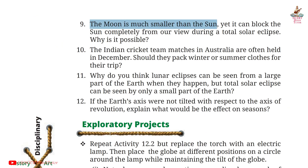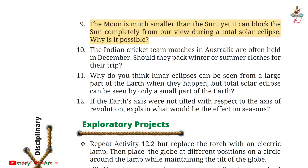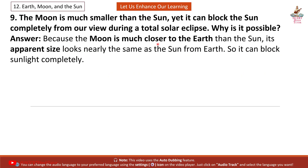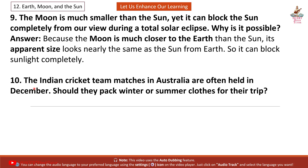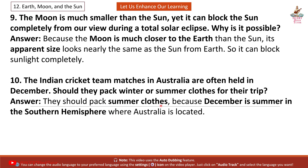Question 9. The Moon is much smaller than the Sun, yet it can block the Sun completely from our view during a total solar eclipse. Why is it possible? Answer: Because the Moon is much closer to the Earth than the Sun, its apparent size looks nearly the same as the Sun from Earth, so it can block sunlight completely. Question 10. The Indian cricket team matches in Australia are often held in December. Should they pack winter or summer clothes for their trip? Answer: They should pack summer clothes because December is summer in the Southern Hemisphere, where Australia is located.